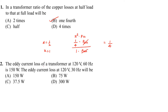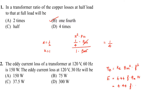Problem number 2: The eddy current loss of a transformer at 120 volt, 60 Hz is 150 watt. The eddy current loss at 120 volt, 30 Hz will be. The eddy current loss formula is η_E = K × Bm² × F². Since Bm is not directly given, using the transformer equation V = 4.44 × F × φm × n, where φm = Bm × A × n.